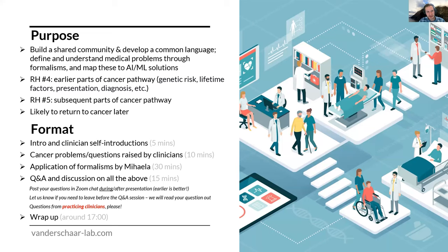Our purpose with Revolutionizing Healthcare is to build a shared community and develop a common language between machine learning experts and clinical professionals. We aim to do this by defining and understanding medical problems through the use of formalisms and by mapping these formalisms to AI and machine learning solutions. We're now part way through a two-part mini-series on cancer. In our previous session we looked at earlier parts of the cancer pathway such as genetic risk, lifestyle factors, presentation, diagnosis and so forth. This time around we're going to look at subsequent parts of the cancer pathway, mainly related to patient treatment and follow-on care.